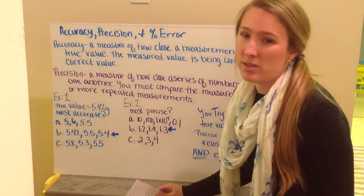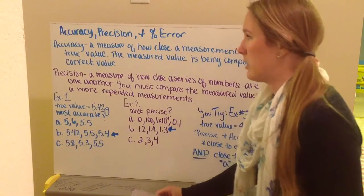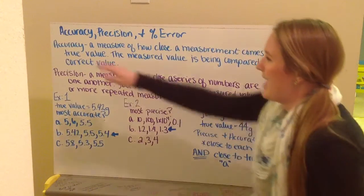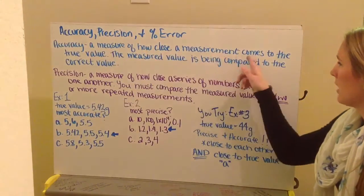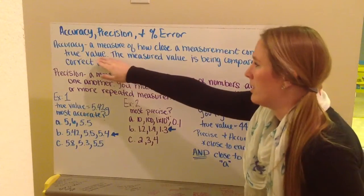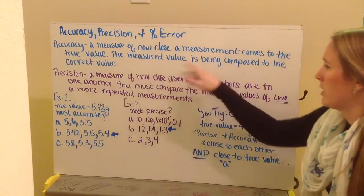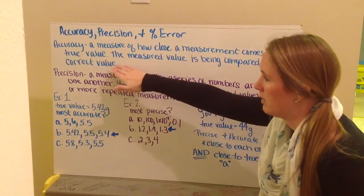This video is on accuracy, precision, and percent error. Accuracy is a measure of how close the measurement comes to the true value. The measured value is being compared to the correct value.